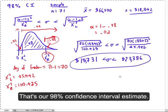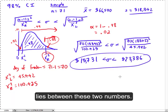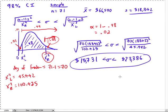That's our 98% confidence interval estimate. And what it means is that we're 98% confident that the true deviation for the population, for the entire population, lies between these two numbers, 15,731 and 23,386.